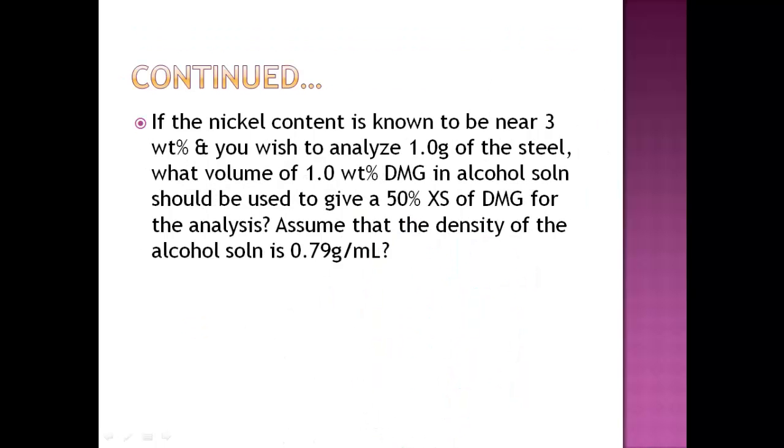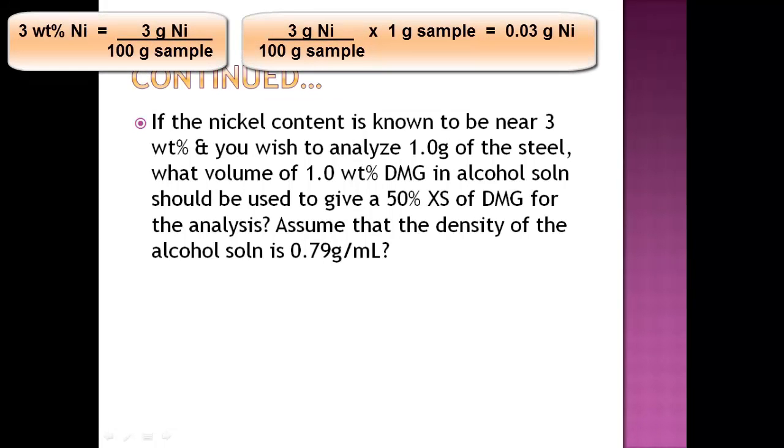The real question becomes: if the nickel content is known to be near 3 weight percent, and you wish to analyze one gram of the steel, what volume of a 1 weight percent DMG in alcohol solution should be used to give a 50 percent excess of DMG for the analysis? Let's read it again. If the nickel content is known to be 3 weight percent, that means they know that the nickel in steel should be about 3 weight percent. So if they want to analyze one gram of the steel, how much nickel do you have? That would be 3 grams of nickel over 100 grams of sample times 1 gram of sample, which would be 0.03 grams of nickel.